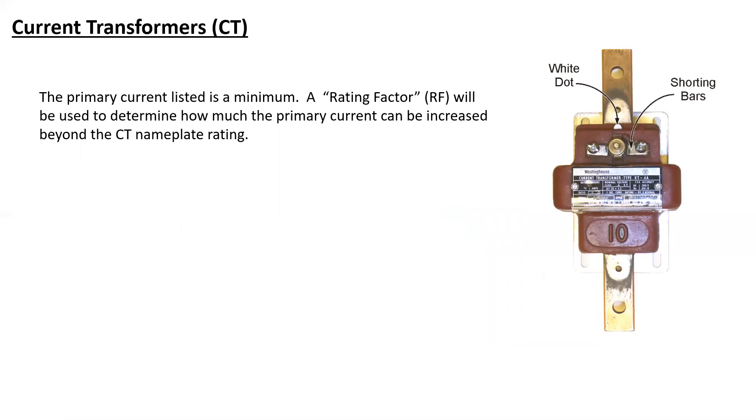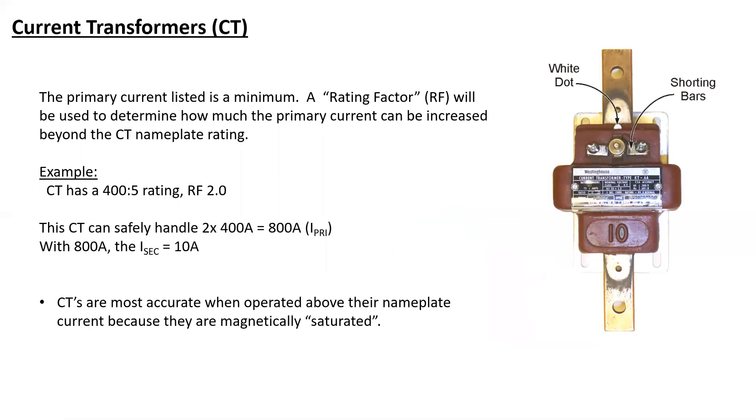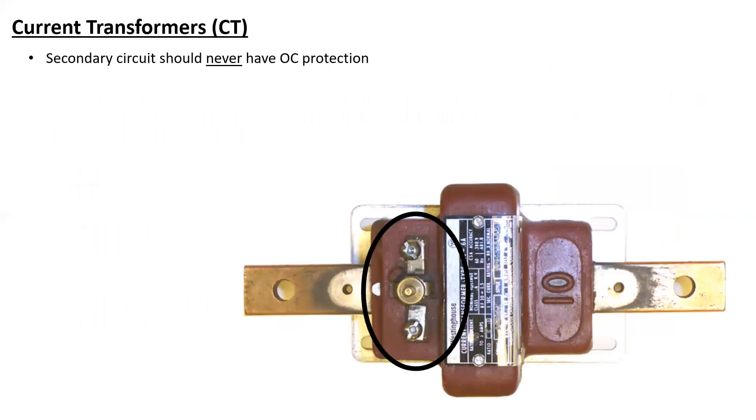On most CTs, what you're going to have is a rating factor. The rating factor is used to determine how much the primary current can be increased beyond the CT nameplate rating. So, the CT that we've been dealing with, 400 to 5, if it had a rating factor of 2, the rating factor is the item that is multiplied by the initial 400 amp rating. So, that means that that CT can safely handle 800 amps, 400 times 2. And with 800 amps, we would expect to get a secondary current of 10 amps. Interesting to note, CTs are most accurate when operated above their nameplate current because they are magnetically saturated. It means they're highly accurate and when we're doing revenue metering, we're charging someone for a product that has to be highly accurate in order to validate the billing.